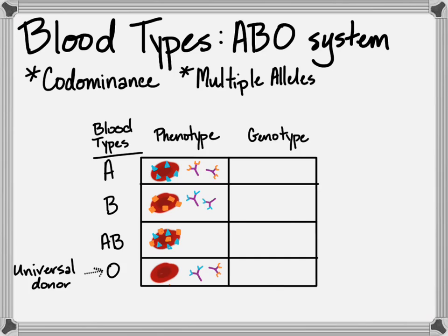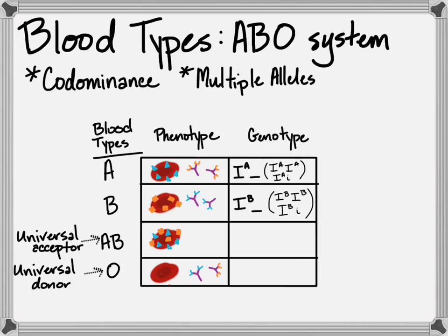So we've got our universal donor and our universal acceptor. Positive and negative is very similar: positive means you have one other protein marker, negative means you don't have that protein marker. As for genotypes: A blood type is any time we have a dominant A allele — always drawn with an 'I' in front of it — and the second allele doesn't matter, so you could have another dominant or a recessive and you'll still have A blood. B is the same — either two dominant B alleles or a dominant and recessive. AB is where codominance comes in: you have to have both A and B dominant alleles, one on each chromosome. And O has the two recessives.